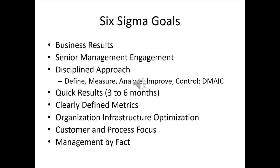So why do Six Sigma? Business results — you want money, market share, whatever it is. And this is a good way to get senior management engaged. It's a disciplined approach, it's repeatable: Define, Measure, Analyze, Improve, Control — DMAIC — and you get quick results in three to six months.